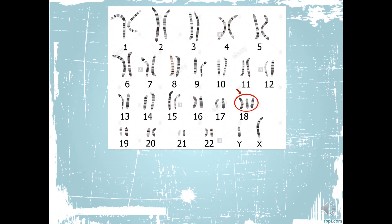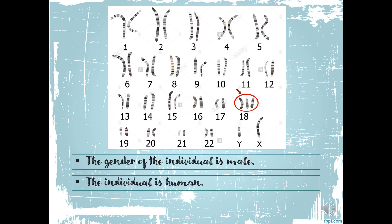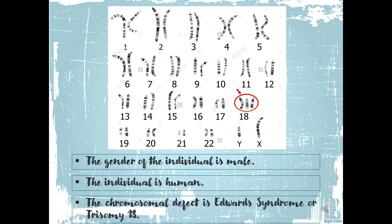Let's have the second karyotype. The gender of the individual is male because of X and Y sex chromosomes. The individual is human because of the 23 pairs of chromosomes. The chromosomal defect is Edwards syndrome or Trisomy 18. In chromosome number 18, you will notice there are three chromosomes instead of only two, so there is a chromosomal defect which is Edwards syndrome or Trisomy 18.